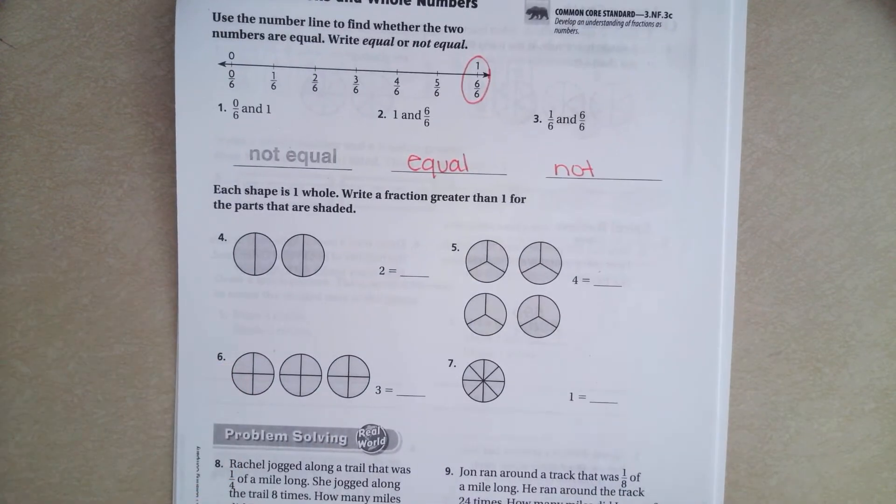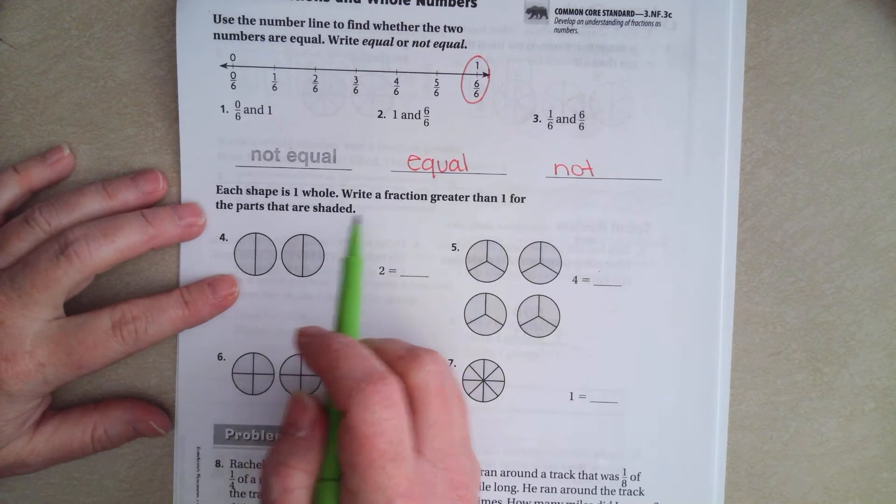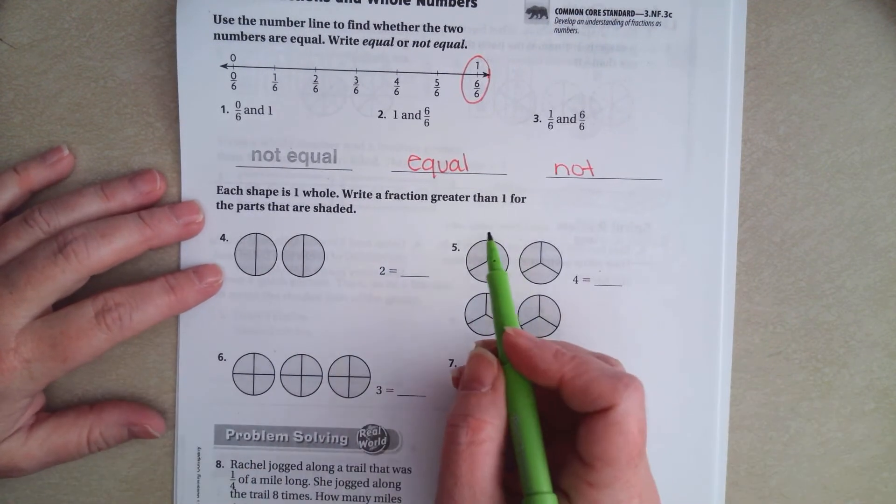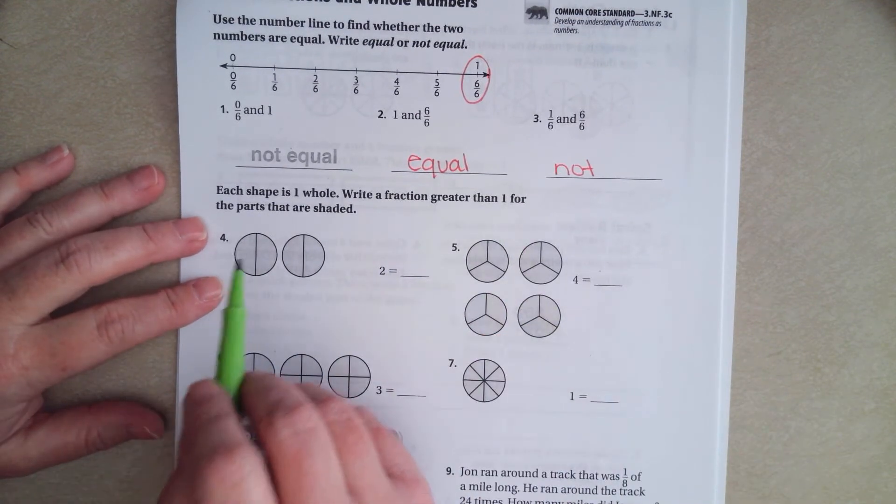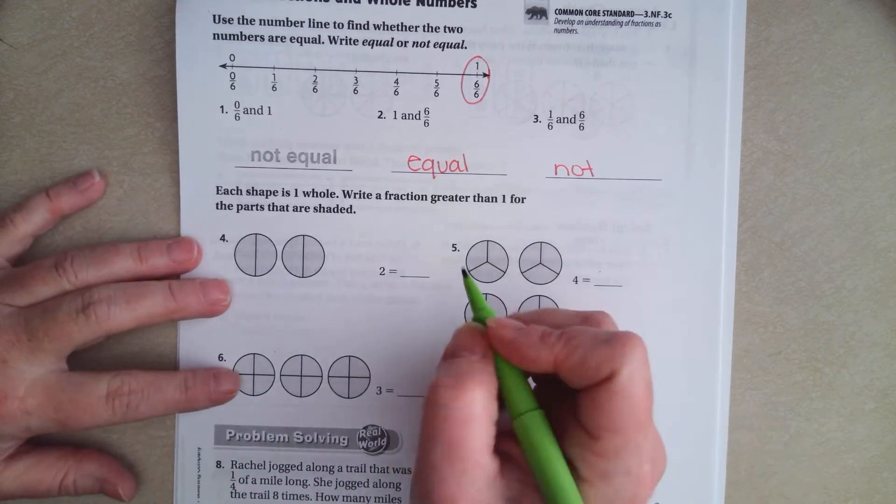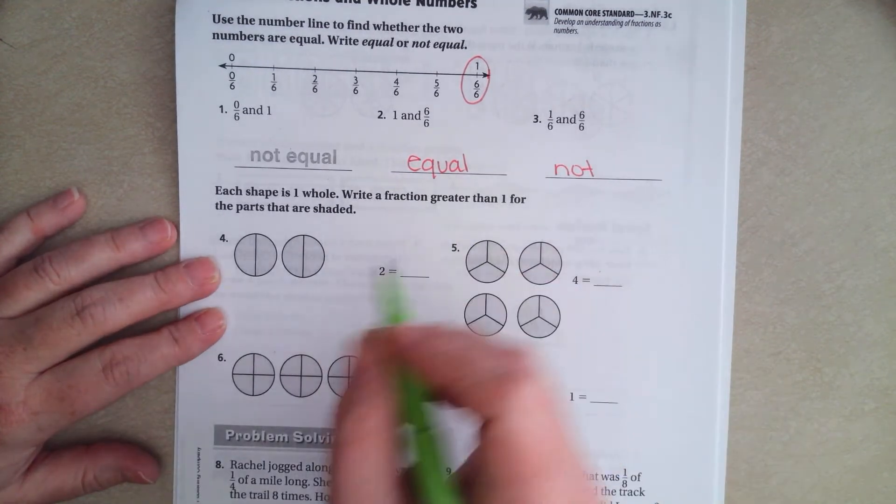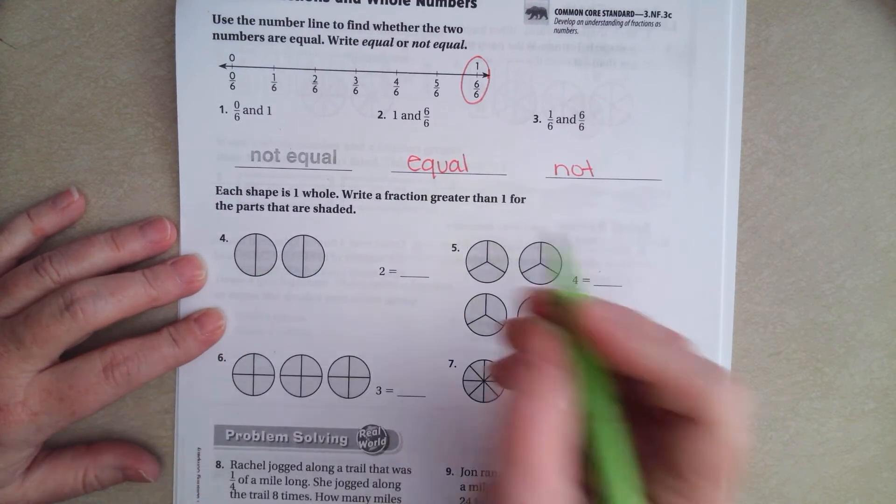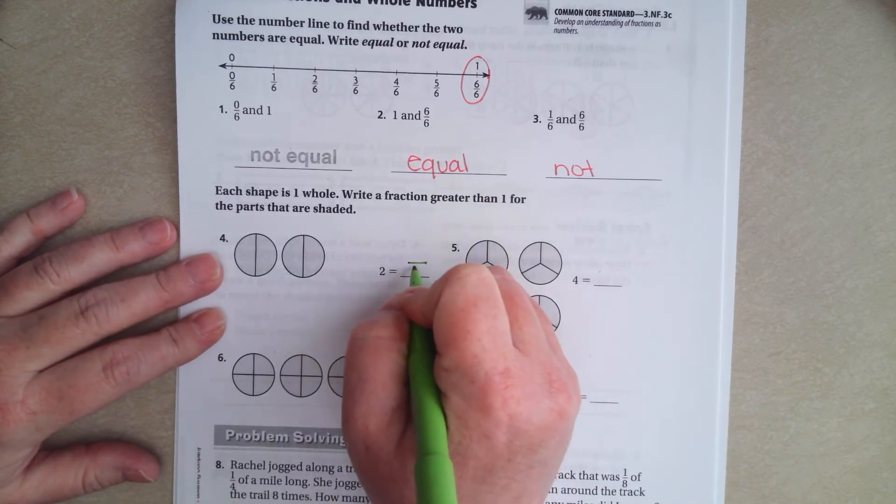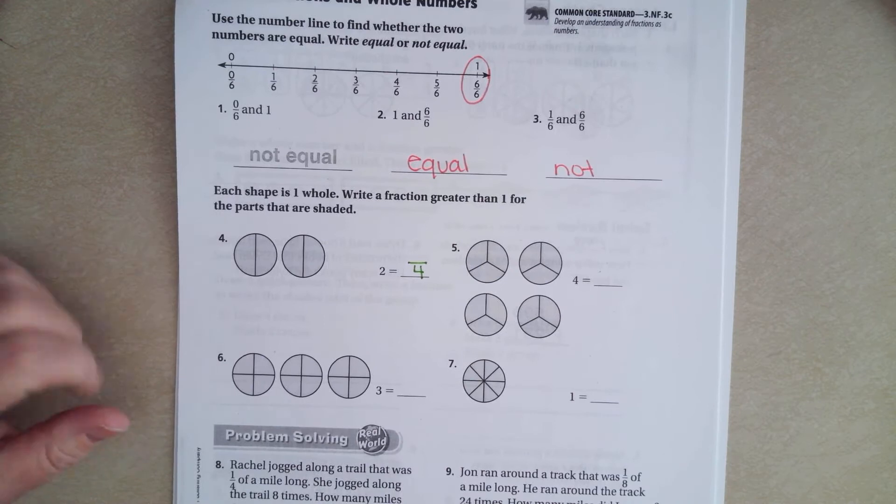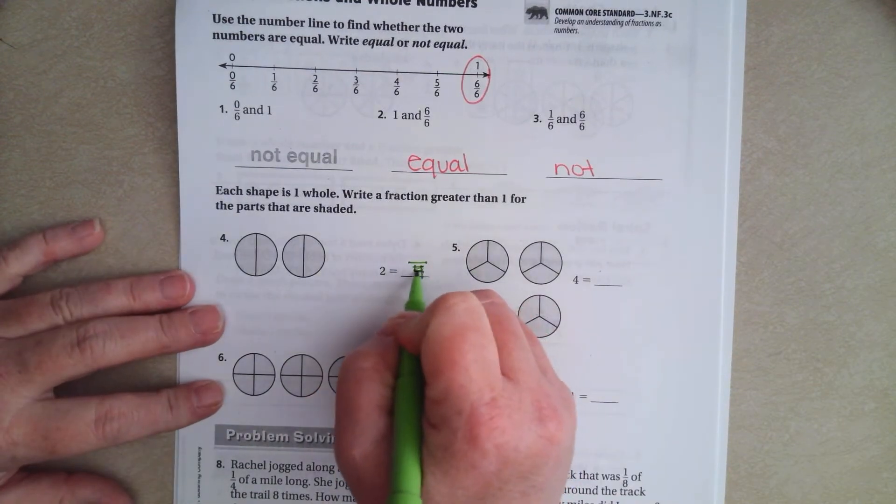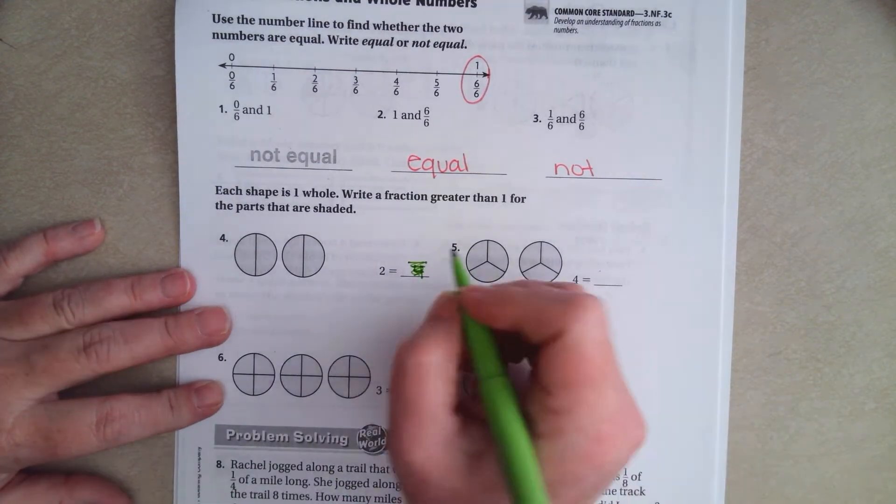Now, we're going to go down and it says each shape is one whole. Write a fraction greater than 1 for the parts that are shaded. So, we obviously have two wholes. But we have 1, 2, 3, 4 equal pieces. So our denominator is 4. I'm sorry. My bad. Miss Leah's bad.